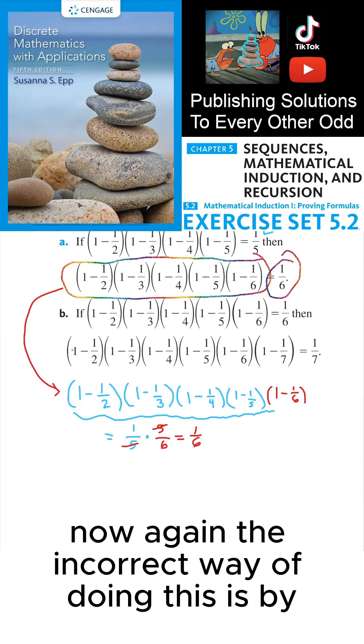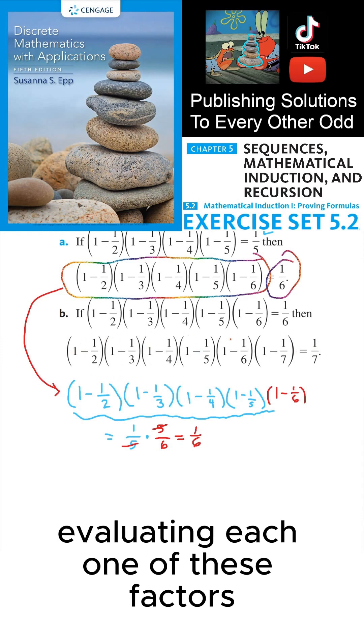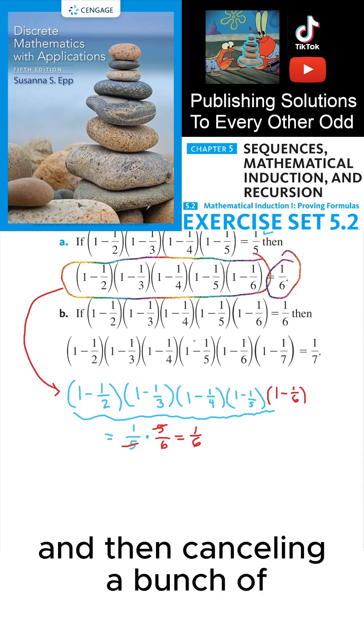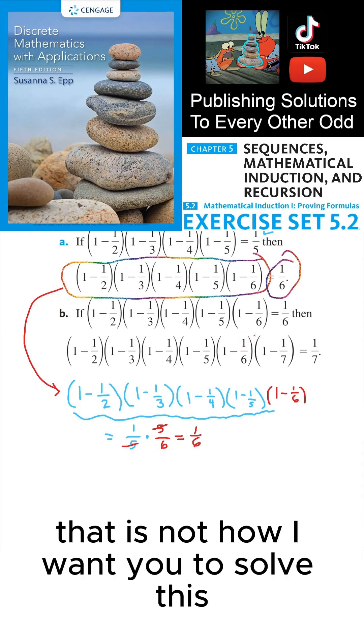the incorrect way of doing this is by evaluating each one of these factors and then canceling a bunch of numerators and denominators. That is not how I want you to solve this.